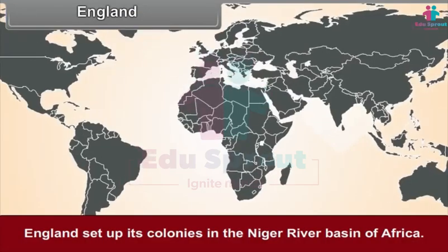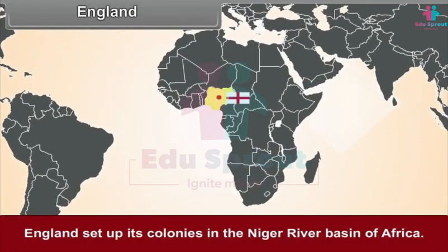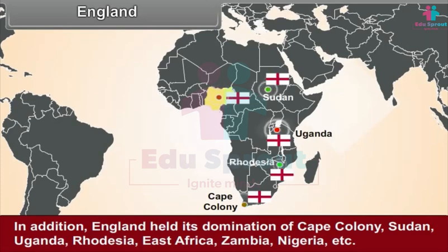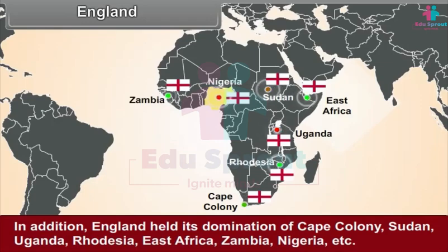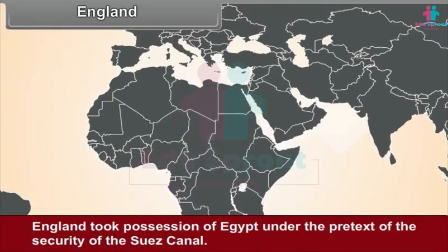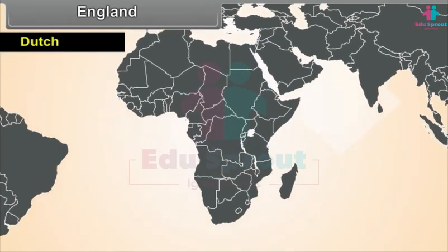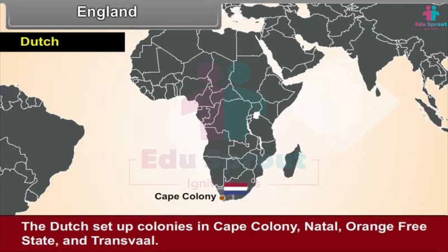England set up its colonies in the Niger river basin of Africa. In addition, England held its domination of Cape Colony, Sudan, Uganda, Rhodesia, East Africa, Zambia, Nigeria, etc. England took possession of Egypt under the pretext of the security of the Suez Canal. The Dutch set up colonies in Cape Colony, Natal, Orange Free State and Transvaal.